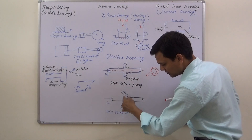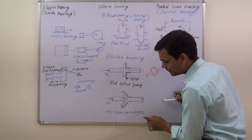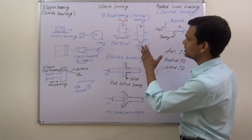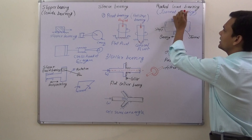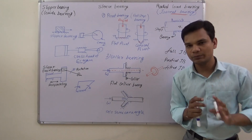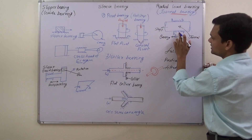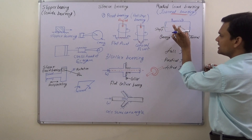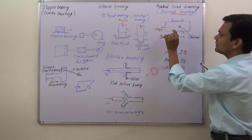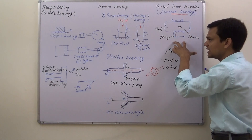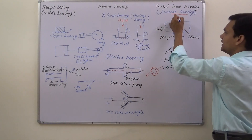In conical collar bearing, the full angle is known as the conical collar angle, and half of this angle — represented as two alpha — means half is known as the semi-conical angle. This can also take axial load. The last type is radial load bearing. Before understanding it, we should know what a journal is — a journal is a part of the shaft, specifically the part of the shaft which is inside the bearing. Radial load bearing, by name, is specified to take radial load.